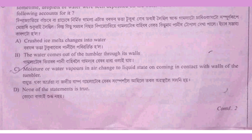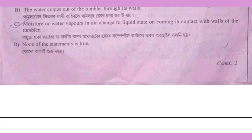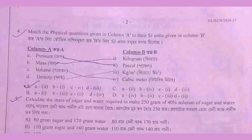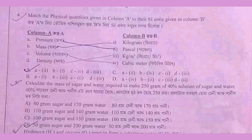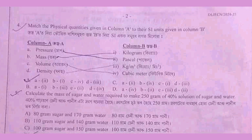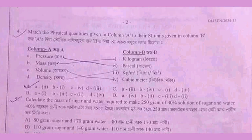The physical quantities are given in column A and their SI units are given in column B. This is column A and column B — physical quantity and SI unit.